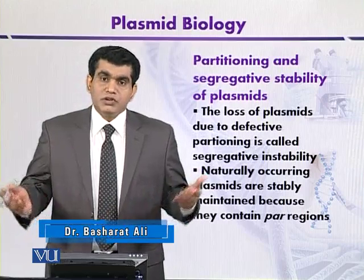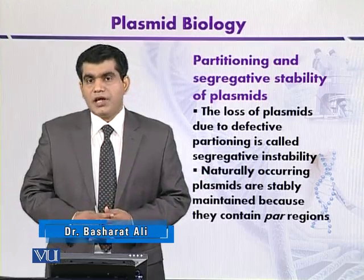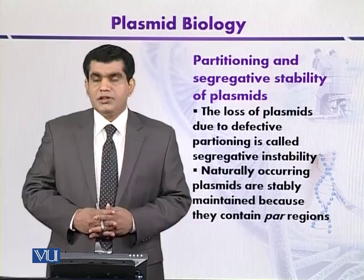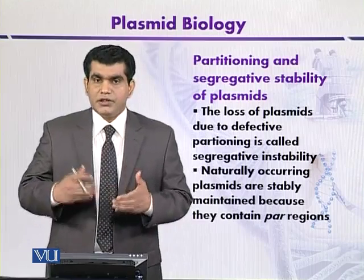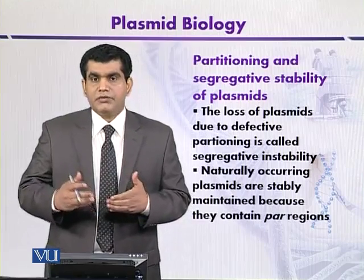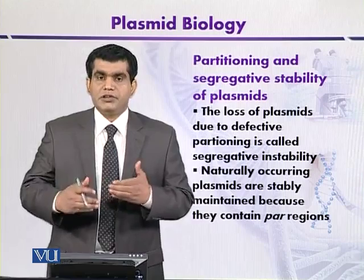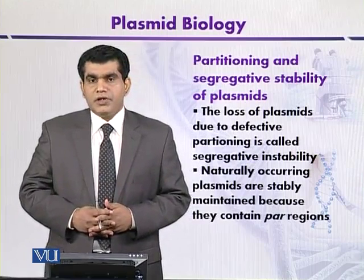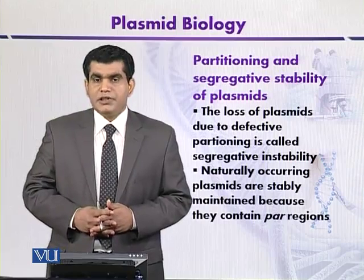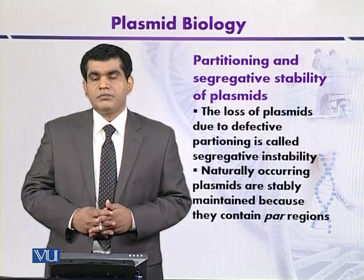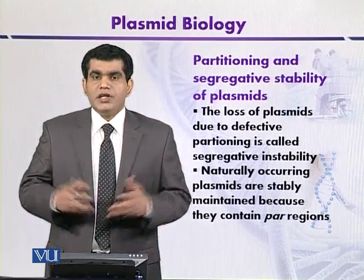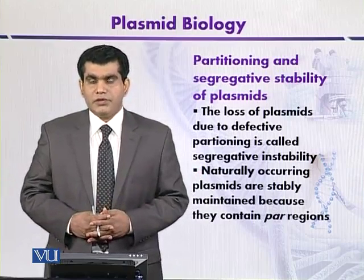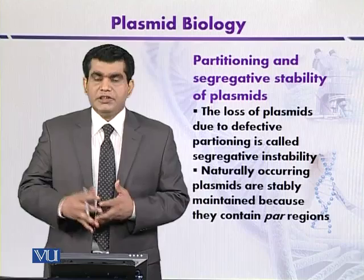Most natural plasmids are stably maintained — that is, they are transferred into the daughter cells from the parents after subsequent cell division. But for some plasmids, this is not the case. An example of a natural plasmid that is stably maintained is ColE1.